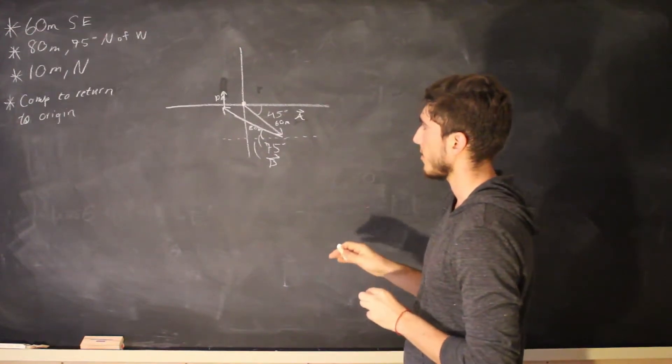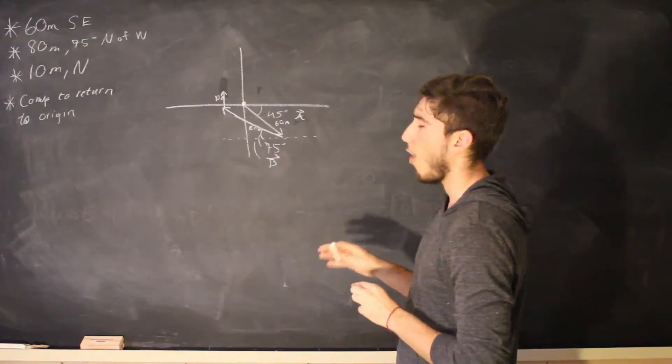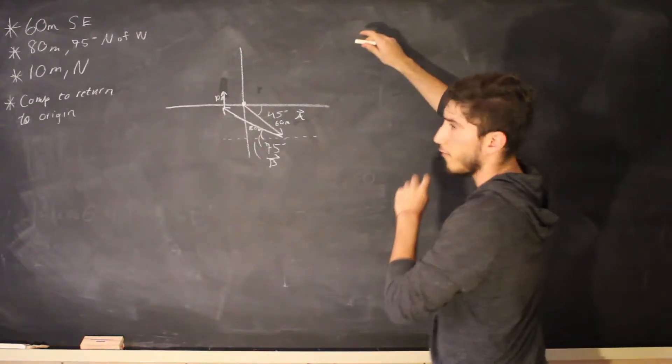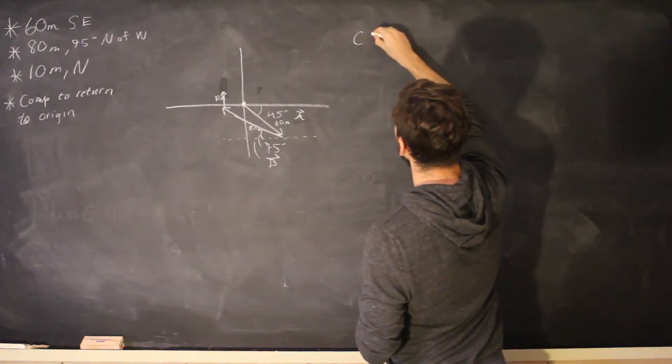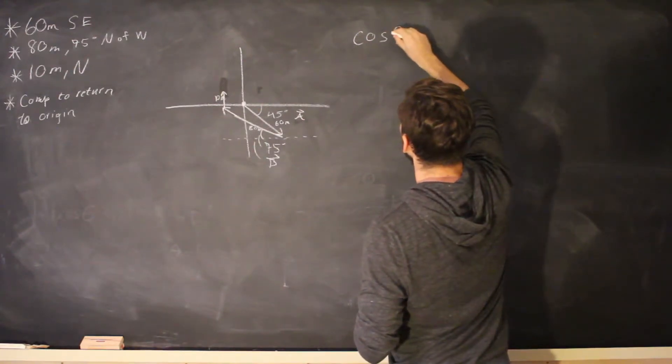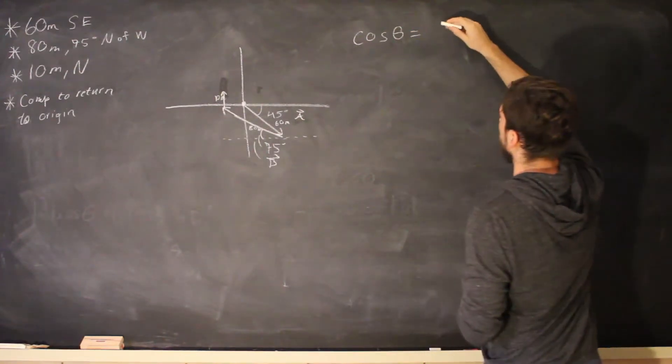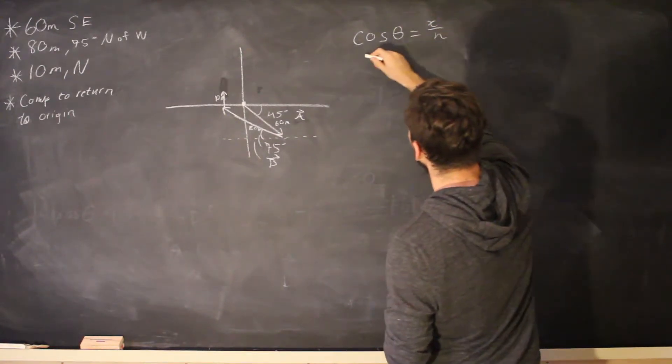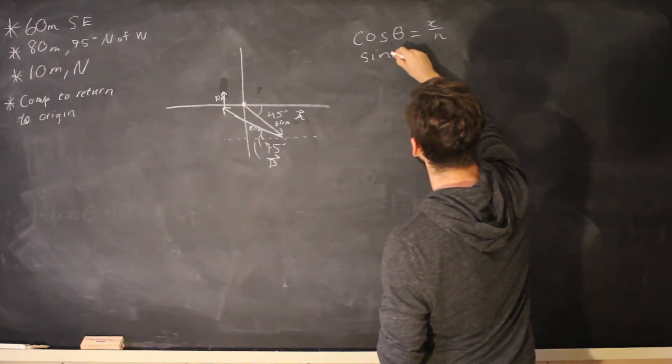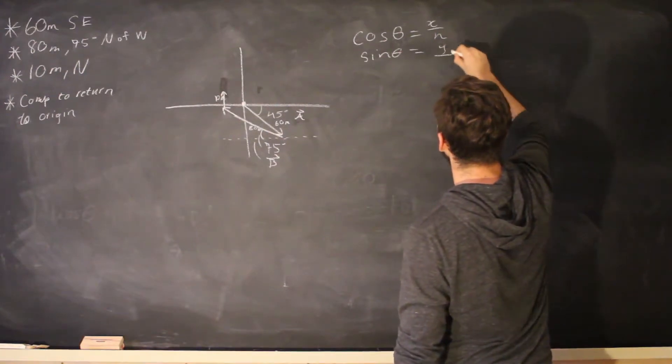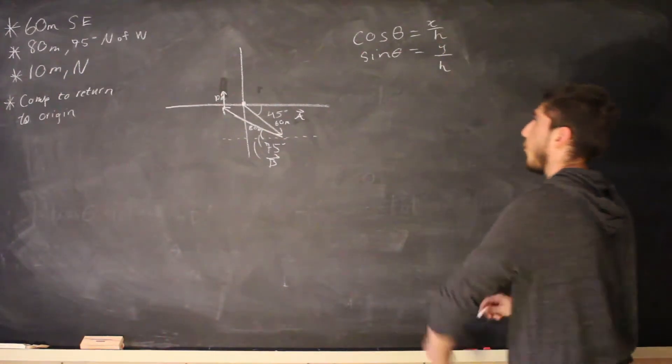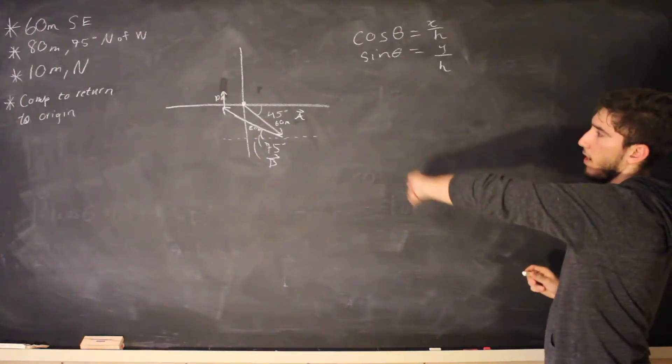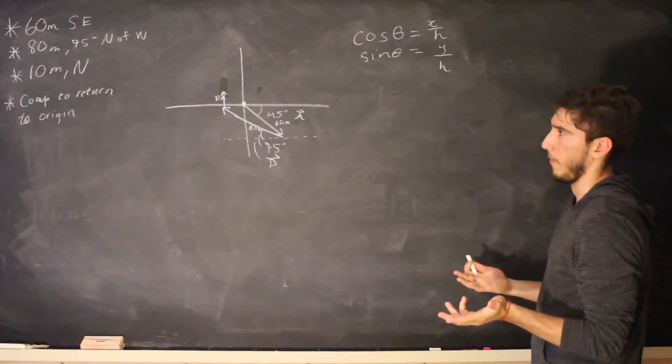So first let's note all of our x components and also our y components. So if you guys remember cosine theta is x over h sine theta is equal to y over h. So when I do the equality I'm just going to multiply h over right away and h in this case would be the magnitude.